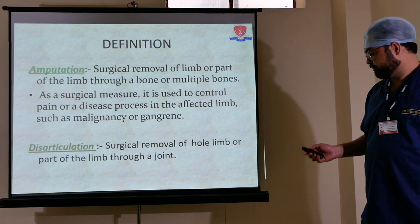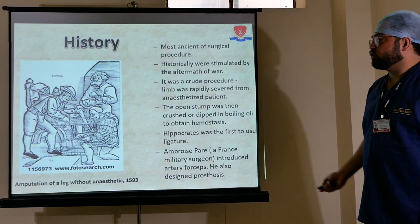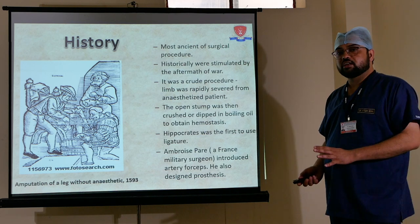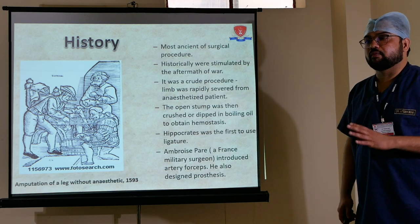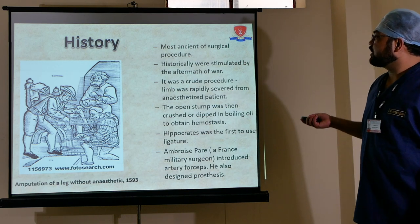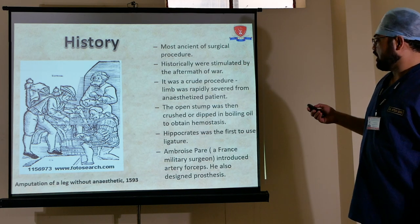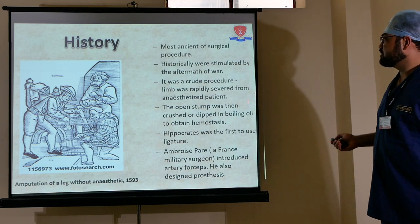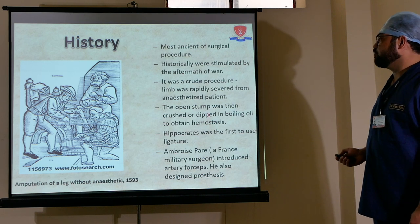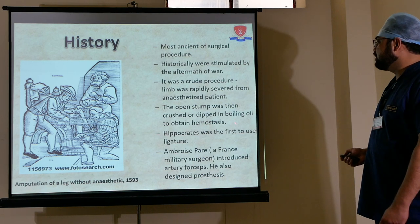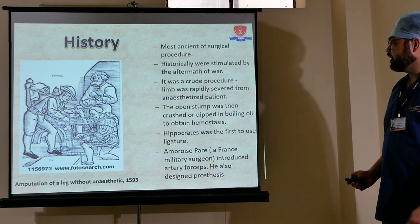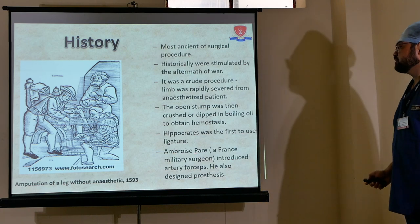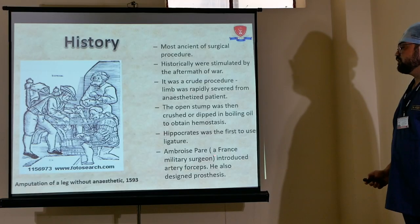What is the history of amputation? Amputation is the most ancient procedure in surgery. Historically it was stimulated by the aftermath of war. It was a crude procedure — the limb was rapidly severed from an anesthetized patient, and the open stump was cauterized or dipped in boiling oil to obtain hemostasis. Hippocrates was the first to use ligature, and Ambrose Paré, a French military surgeon, introduced artery forceps and also designed prostheses.